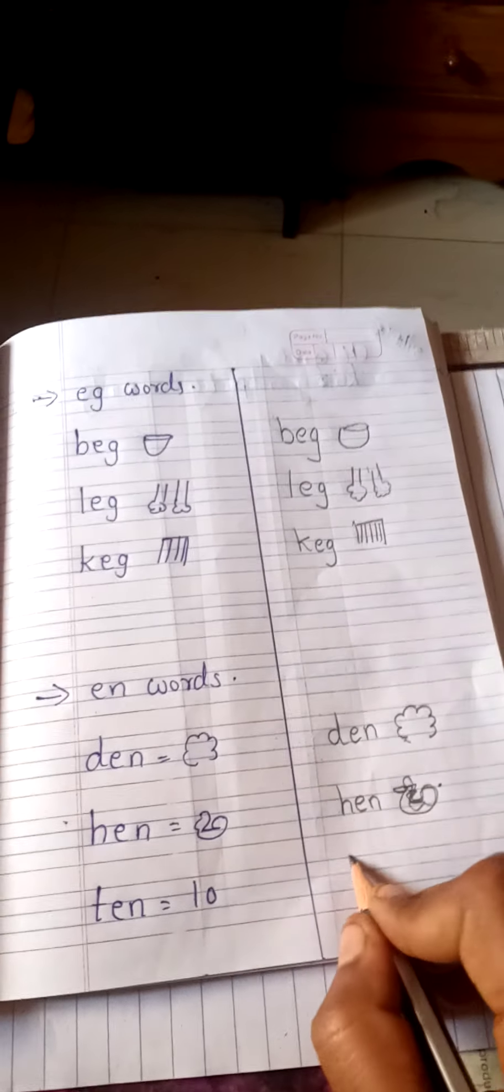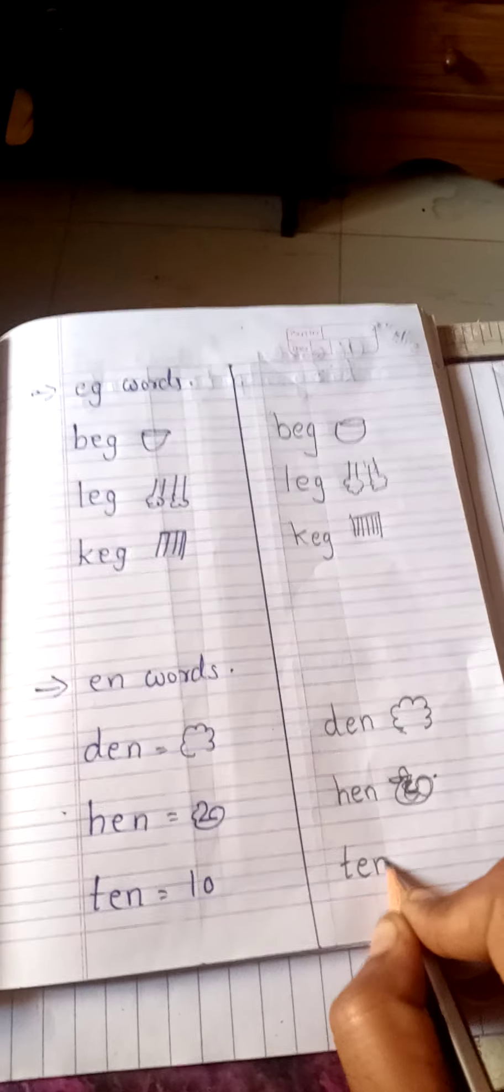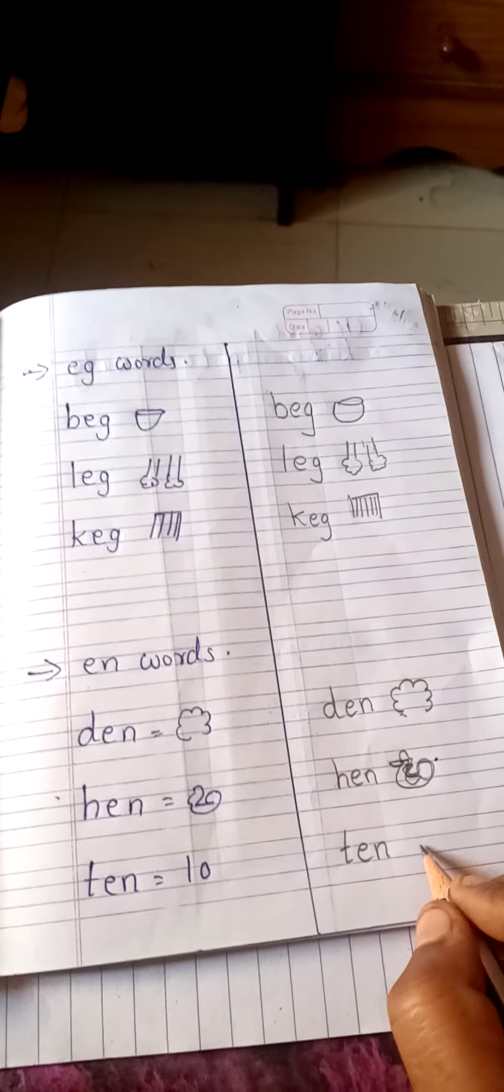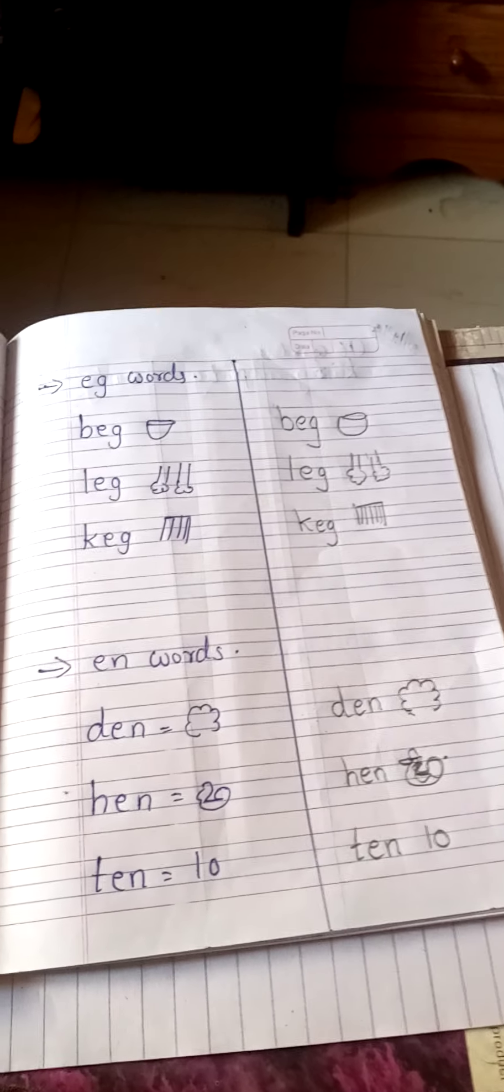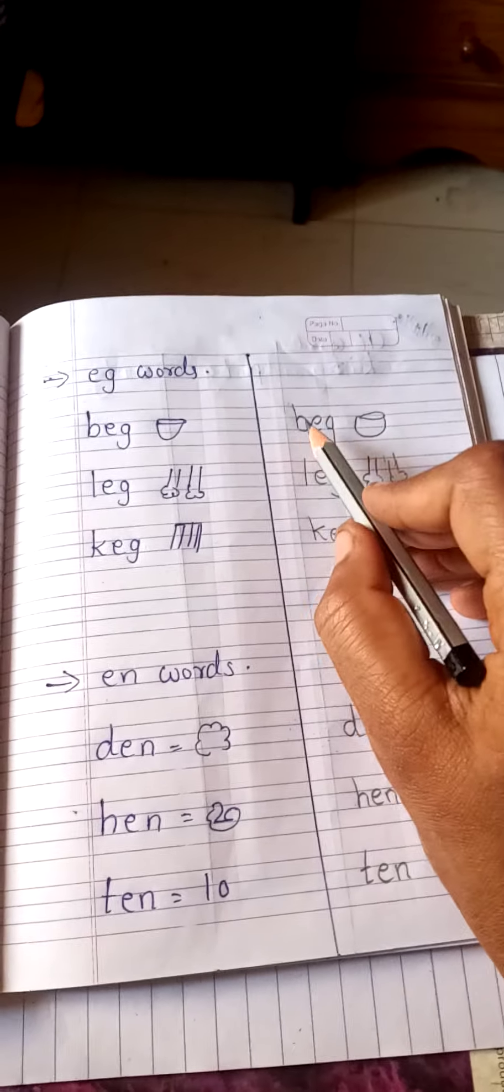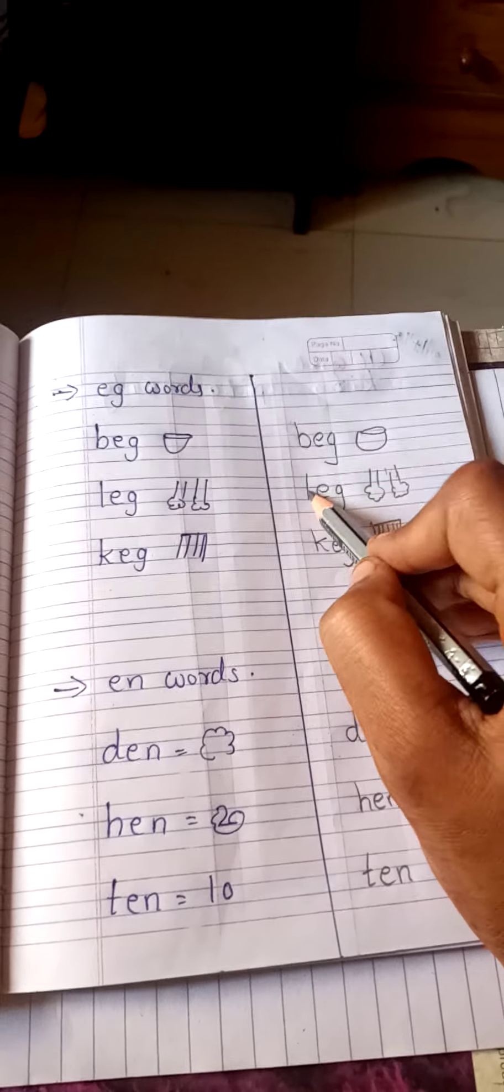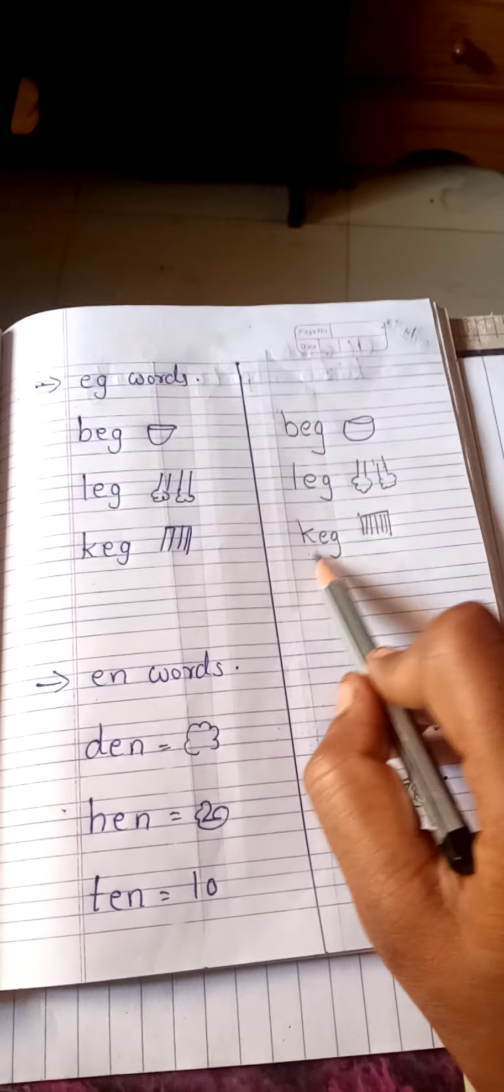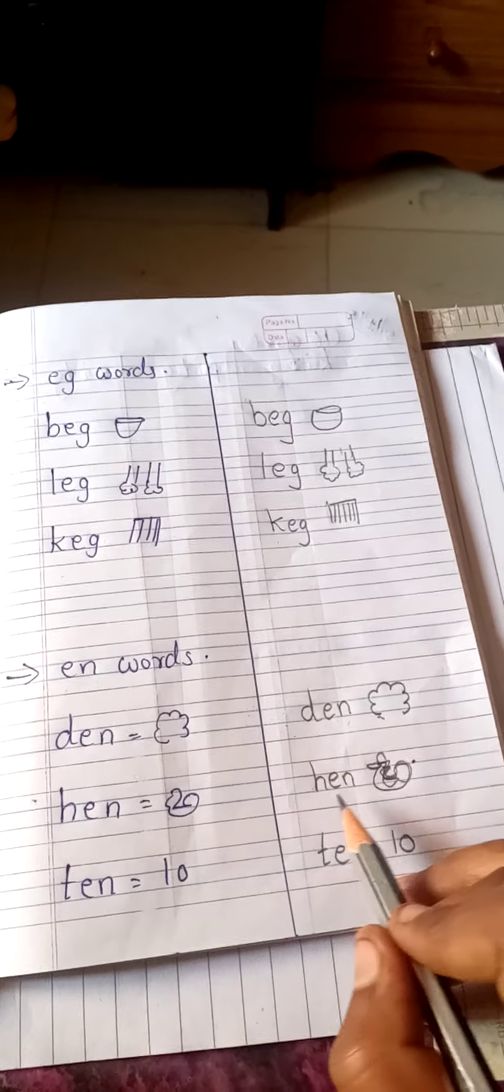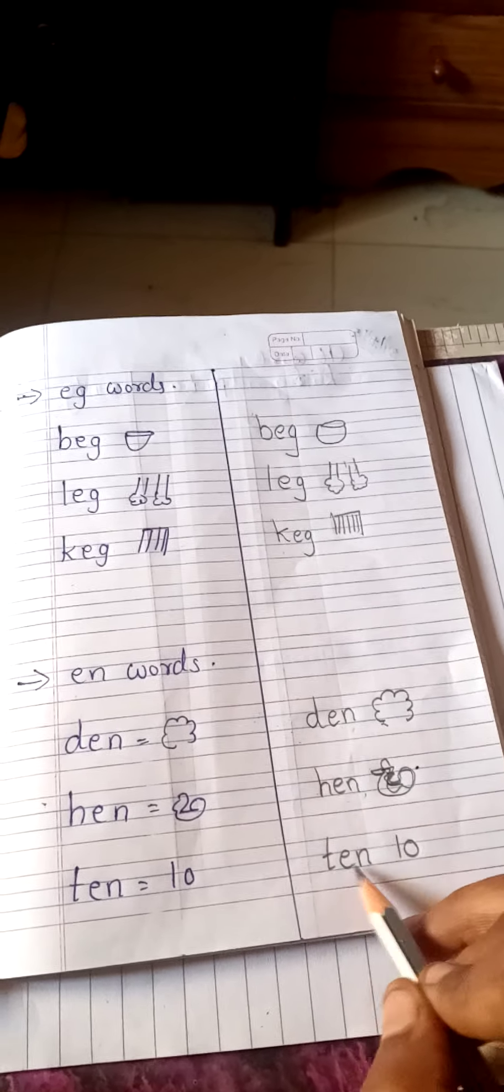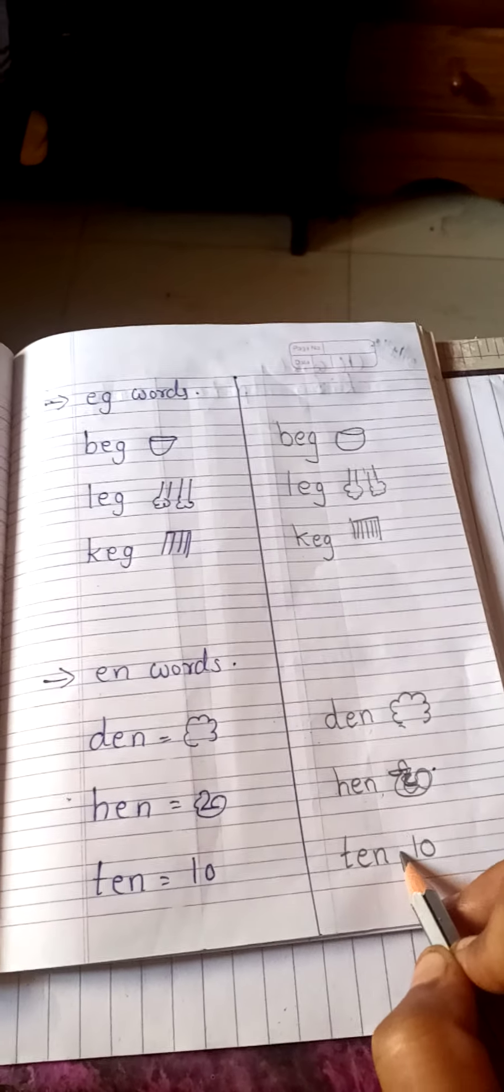Now next, T-E-N, ten. T-E-N, ten. Repeat back, my children. B-E-G, beg. L-E-G, leg. K-E-G, cage. D-E-N, den. H-E-N, hen. T-E-N, ten.